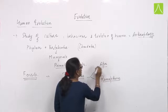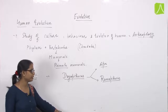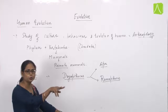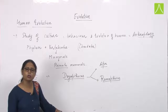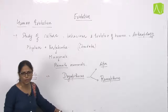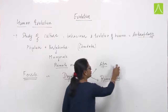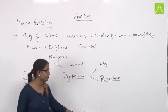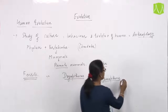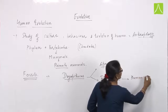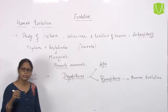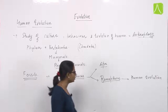Both Ramapithecus and ape have characters similar to Dryopithecus, meaning Dryopithecus evolved into two different species — ape and Ramapithecus. Although ape is more similar to Dryopithecus, Ramapithecus is our exact ancestor — the ancestral form of human beings.